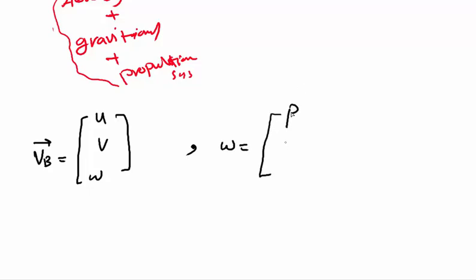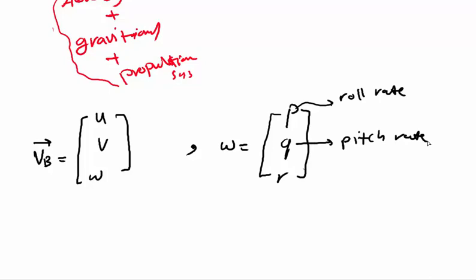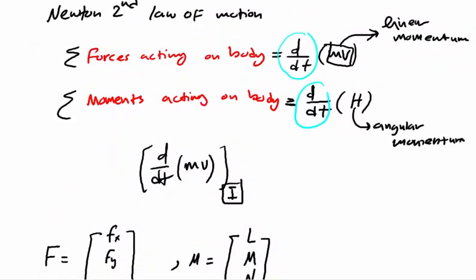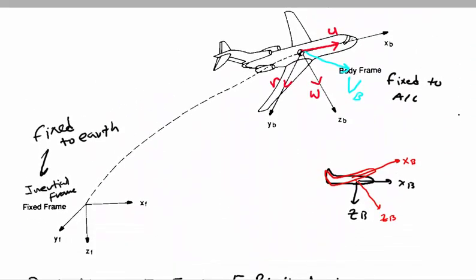The angular velocity omega-body has components p, q, and r, corresponding to roll rate, pitch rate, and yaw rate respectively.